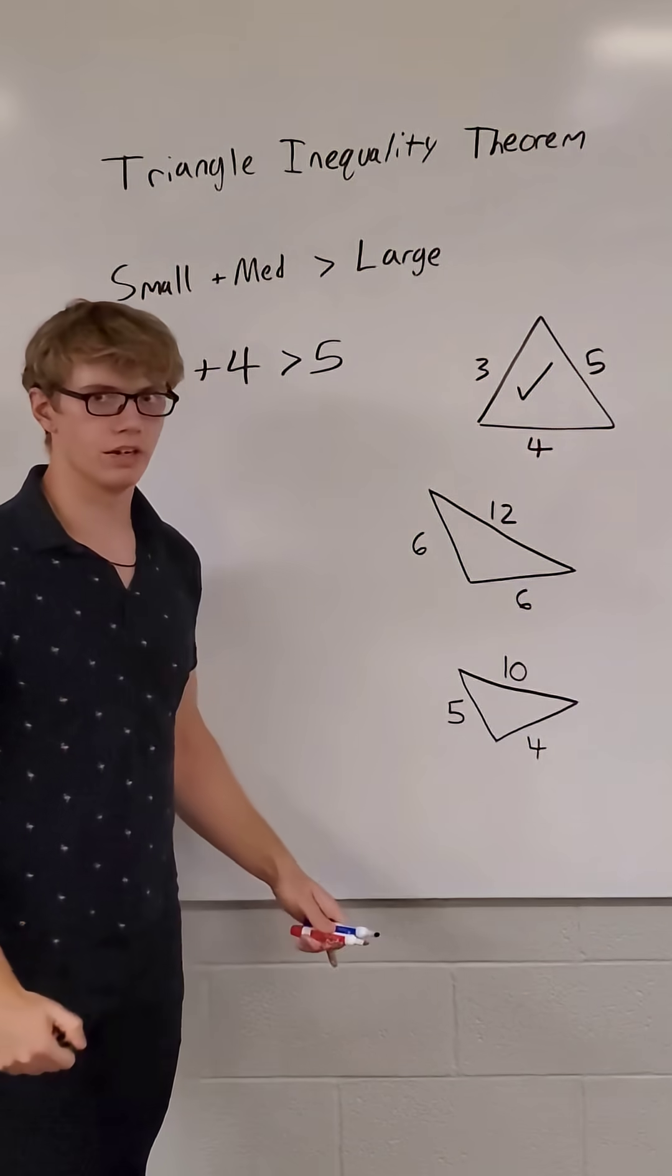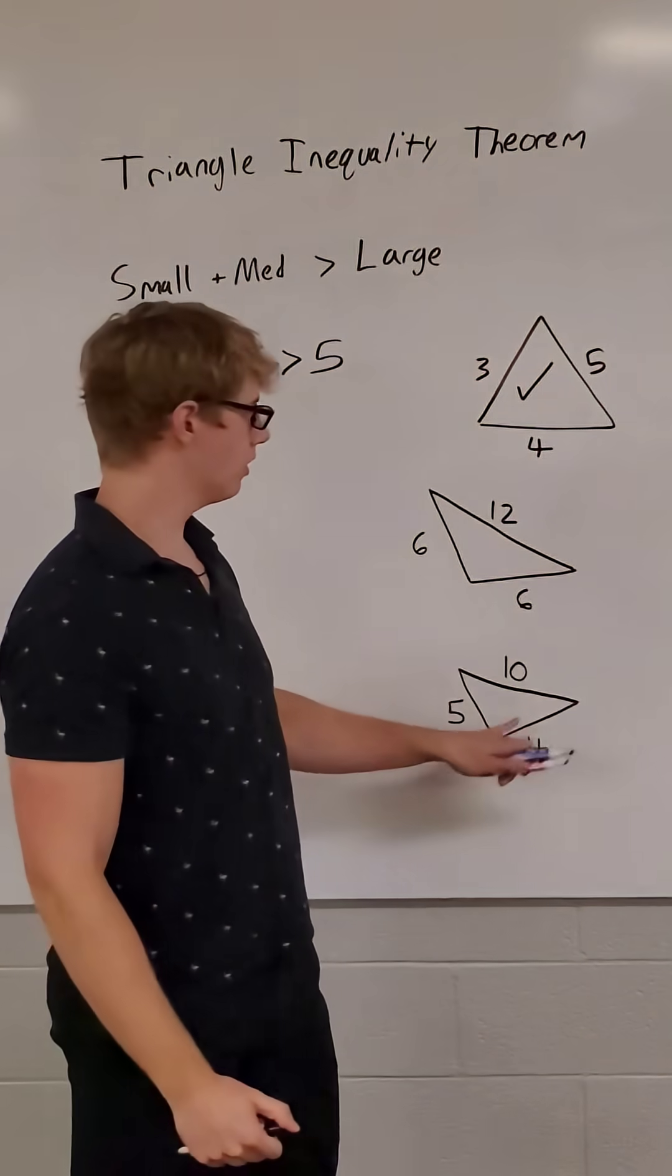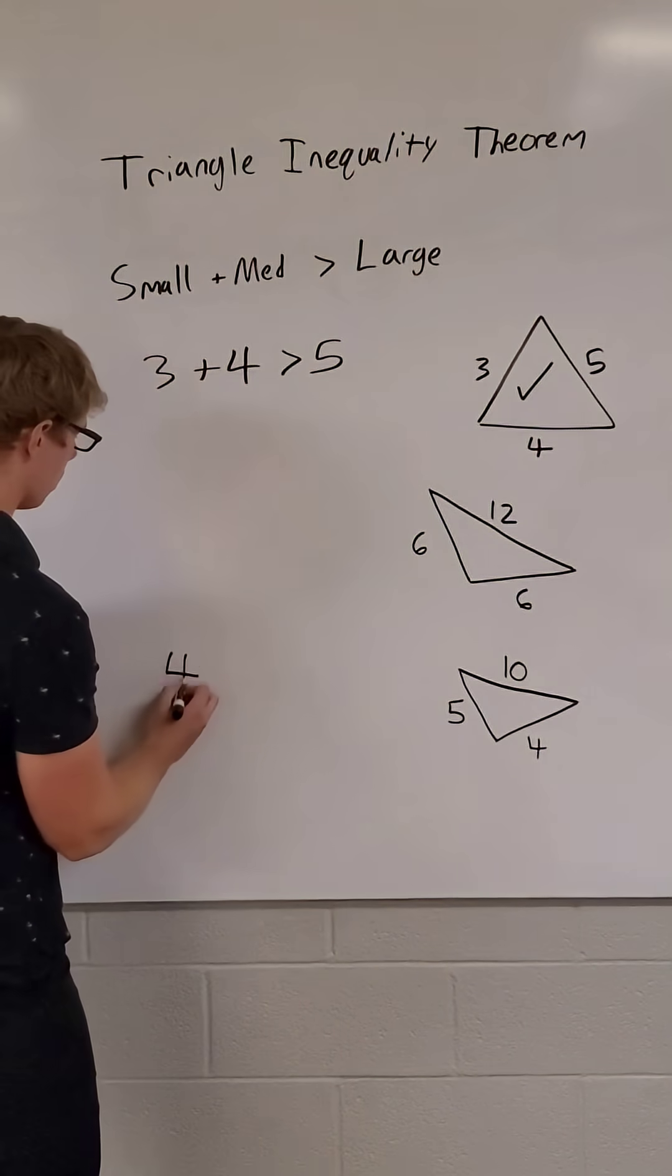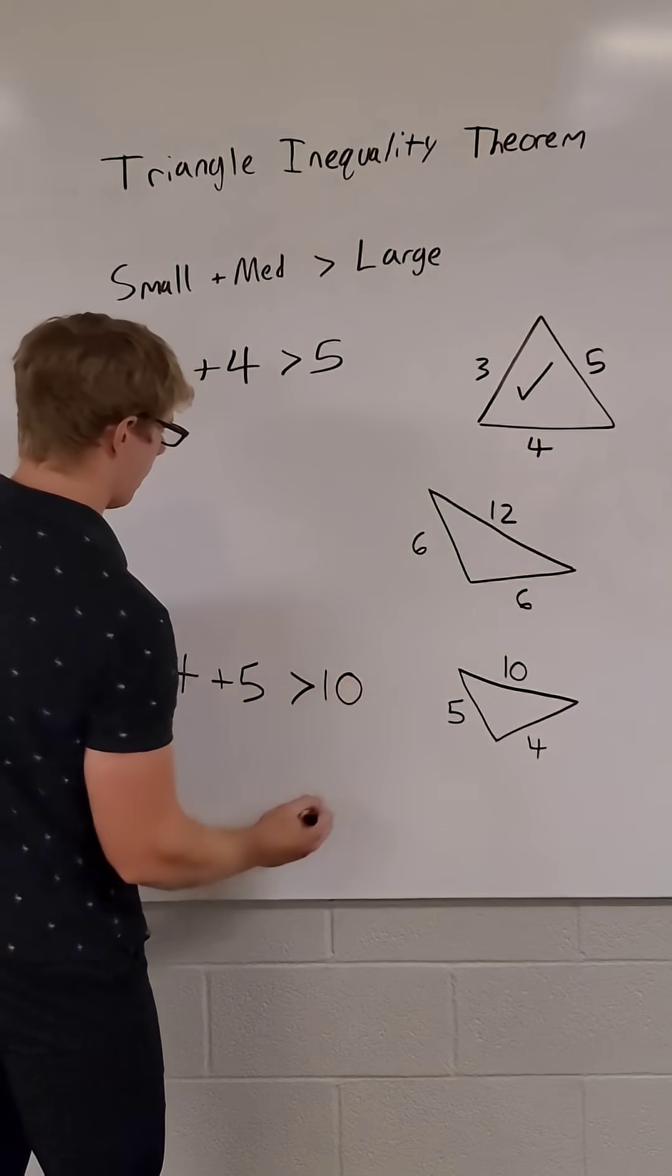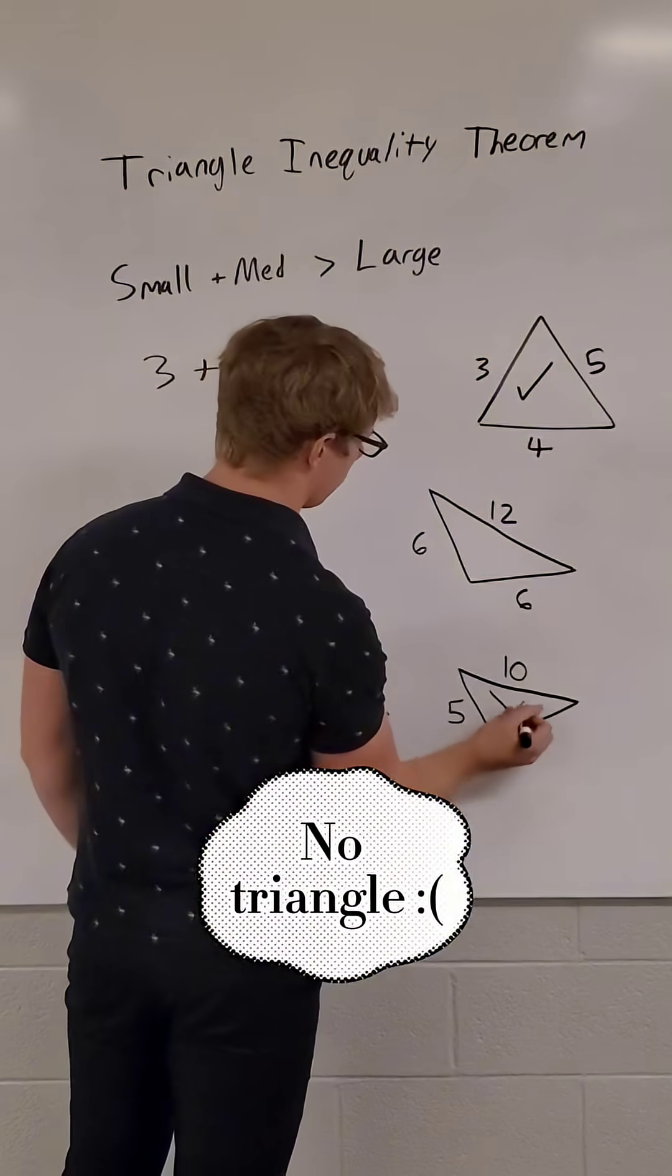Let's move down to the bottom down here. The smallest side is 4, the medium side is 5, the largest side is 10. So if we were to try this, 4 plus 5 is not greater than 10. This does not work, so we do not have any triangle here.